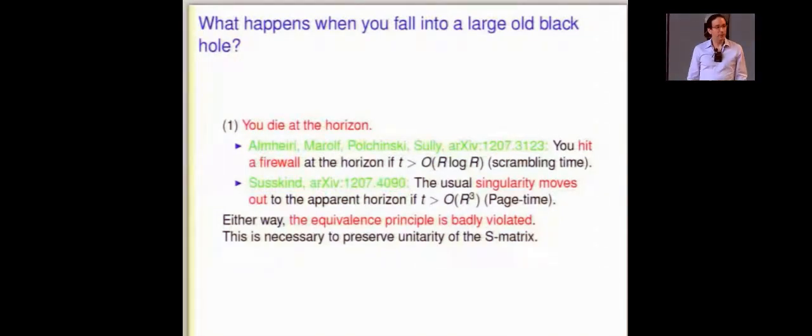Lenny Suskin quickly followed up with a paper in which I think he basically agreed with the dramatic modifications to physics in flat space, though he disagreed about some of the details. How old the black hole has to be, I'm going to call these people AMPS. So AMPS think that it only has to be as old as R log R, where R is the Schwarzschild radius in Planck units, everything will be in Planck units.